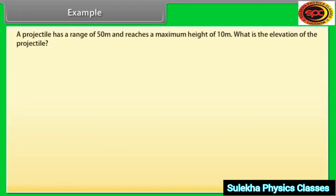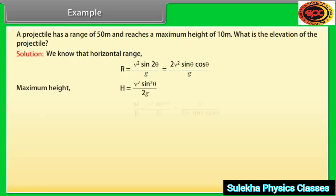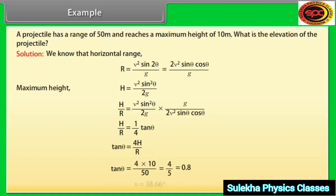Let's take an example of projectile motion. A projectile has a range of 50 meter and reaches a maximum height of 10 meter. What is the elevation of the projectile? Let's see the solution. We know that horizontal range = v²sin2θ/g. We derive the relation between height and range is given by h/r = 1/4tanθ. On calculating this equation, we get the value of θ equals to 38.66 degree.